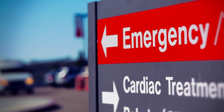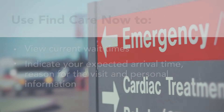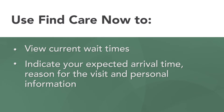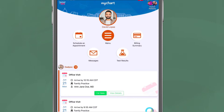If you need to visit our emergency room, use Find Care Now to view current wait times and help us prepare for your visit by indicating your expected arrival time, reason for the visit, and personal information. Find Care Now is accessible from our website homepage and from MyChart. In this video, we will show you the steps for using Find Care Now in MyChart.